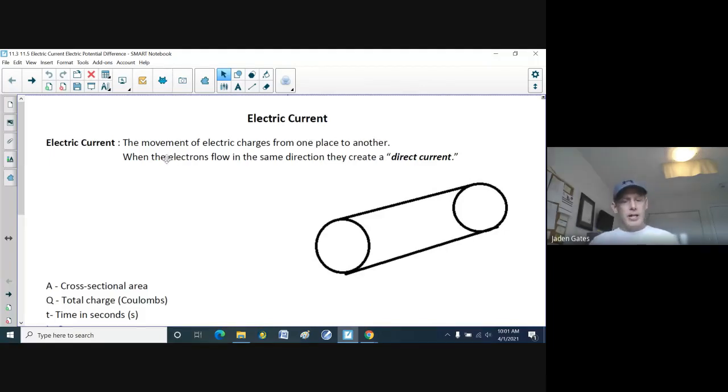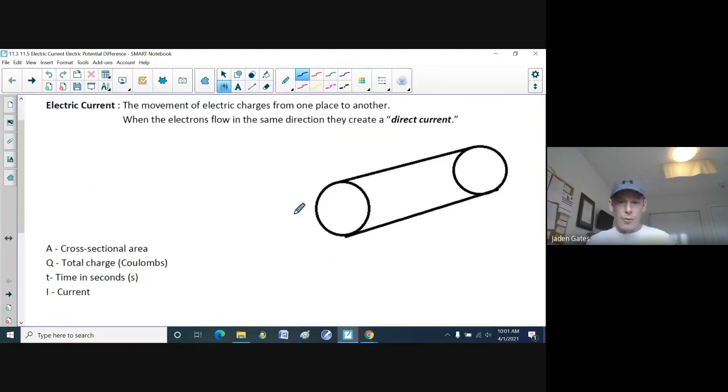That's called electric current. Protons don't move, neither do neutrons, but electrons do, part of the atom. And when electrons flow in the same direction, they create a direct current. So what we have is current, or charge. Moving charges go through this. You can look at this as a wire.